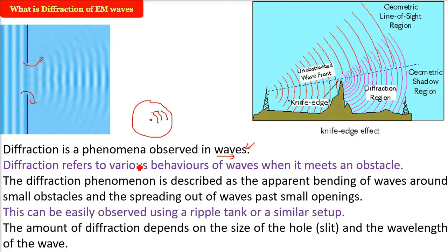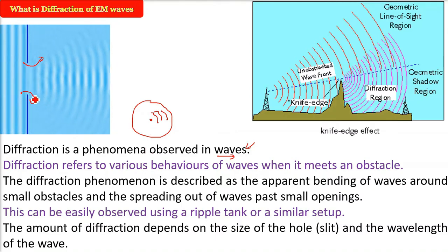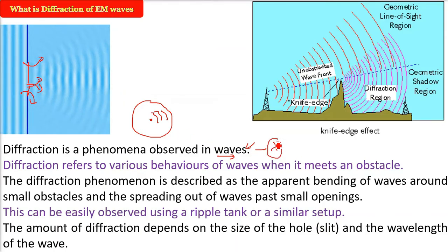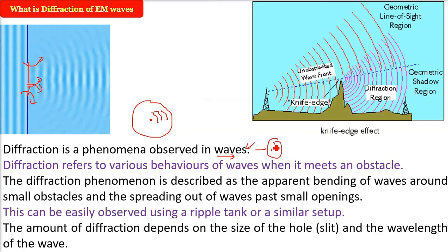The amount of diffraction depends on two things: the size of the hole or slit or obstacle, and the wavelength of the wave, that is the lambda. So it depends on lambda of course, lambda is connected to frequency. So the size of the hole and the wavelength of the wave, diffraction is depending upon these two characteristics.